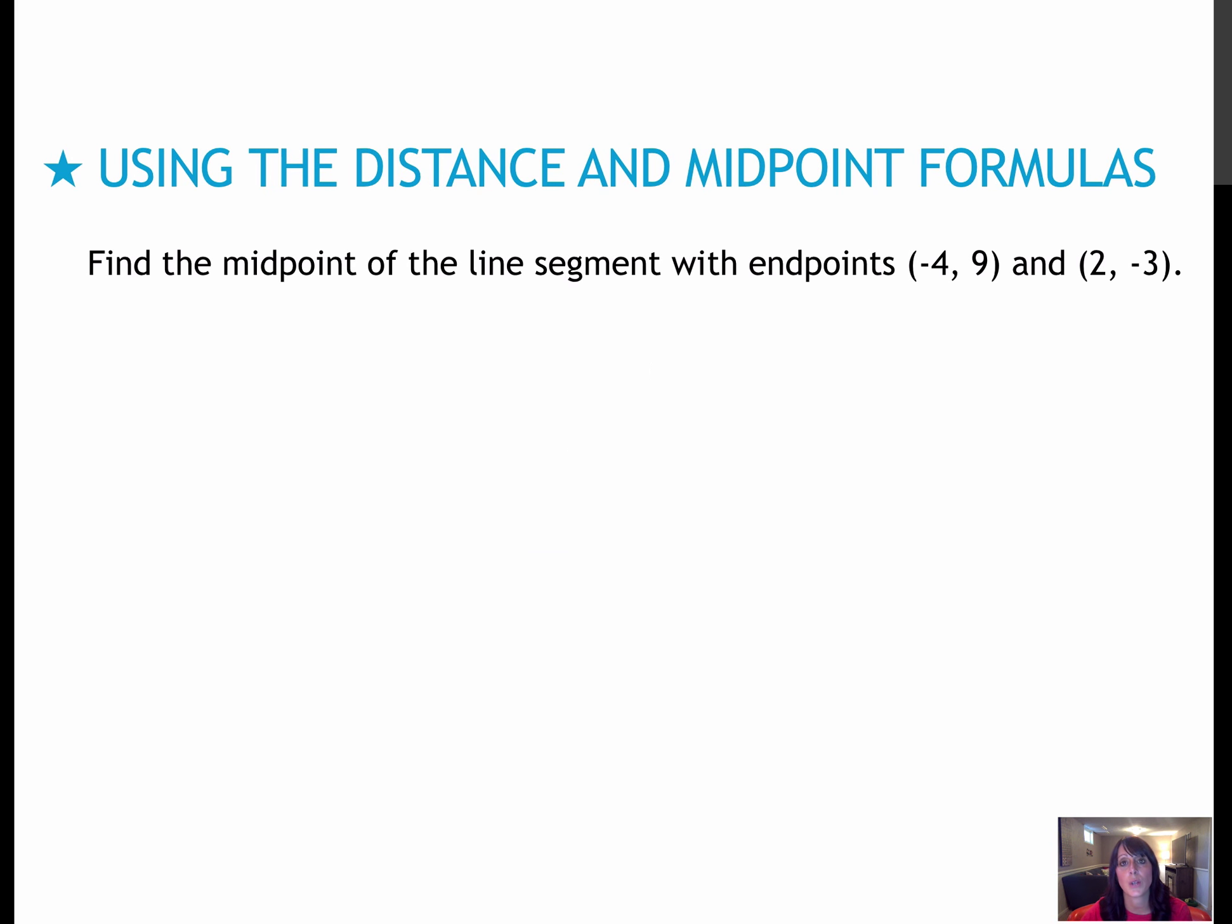Here's one for you to try. Press pause, find the midpoint of the segment, then press play to check your work. Midpoint is fairly easy. I'm just adding the two values. The biggest thing you need to remember is when do you add and when do you subtract. When you're finding the midpoint, you add every time. (-4 + 2)/2 is -2/2, and (9 + (-3))/2 is 6/2. This reduces to -1, and 6 over 2 reduces to 3. Therefore, the midpoint is (-1, 3).